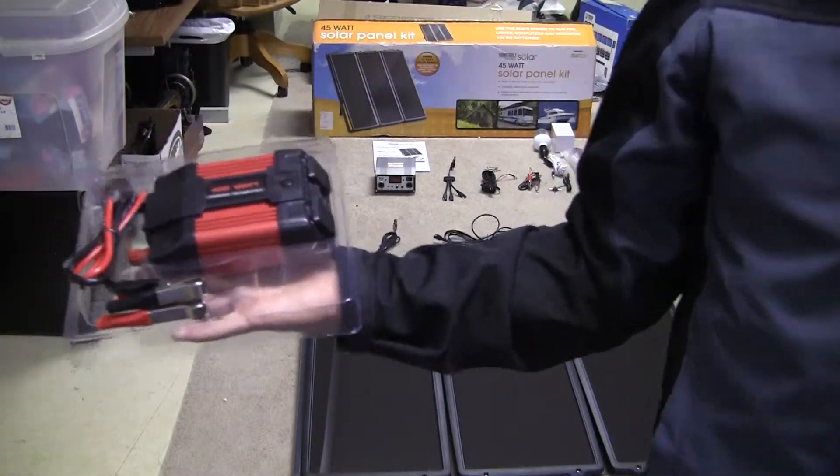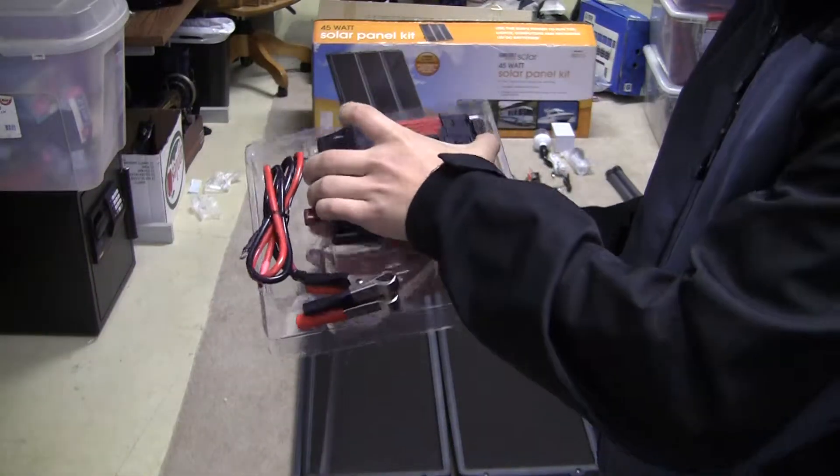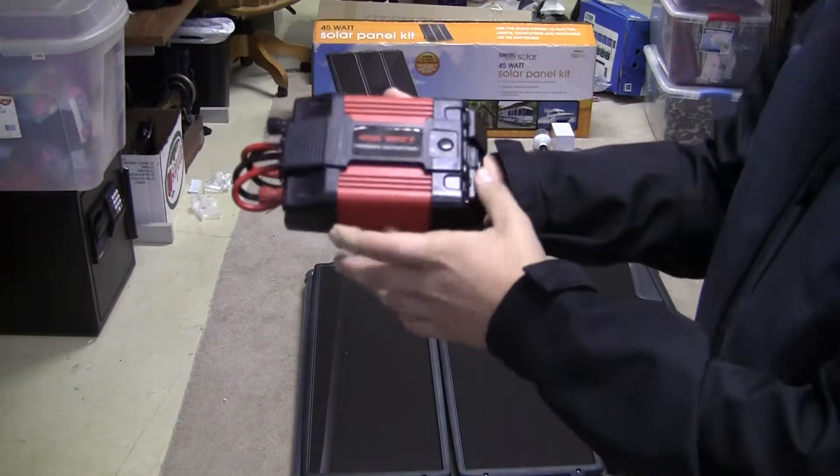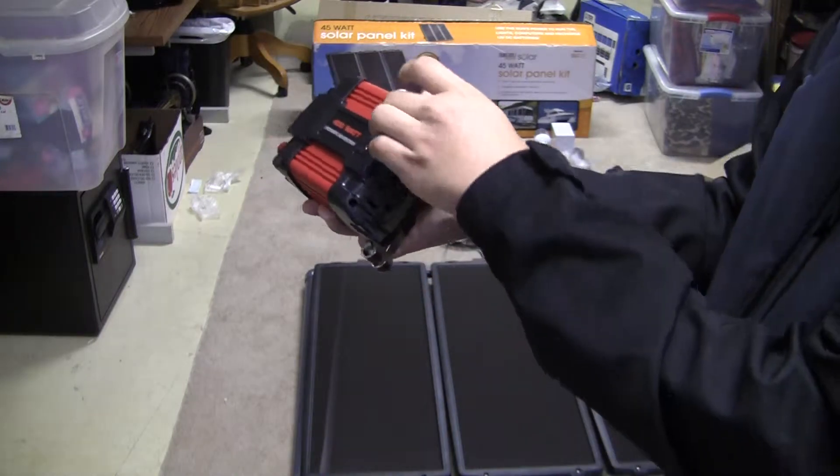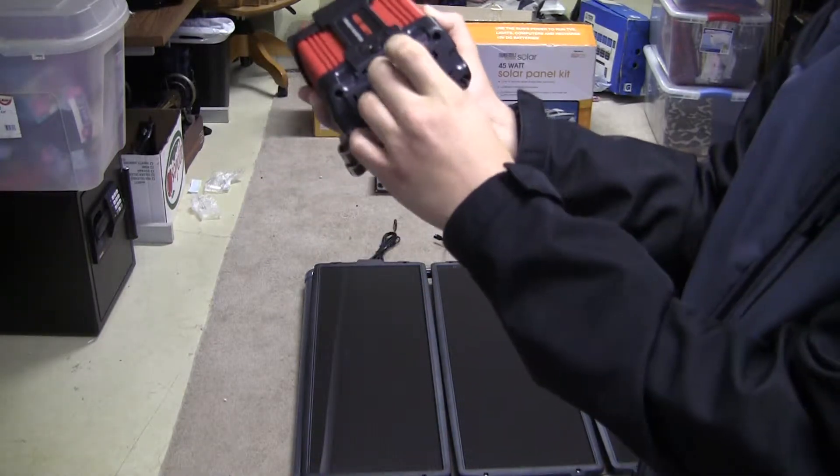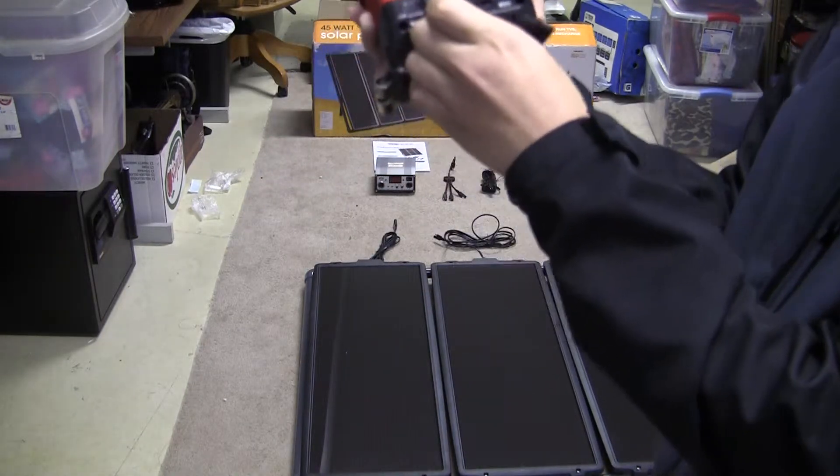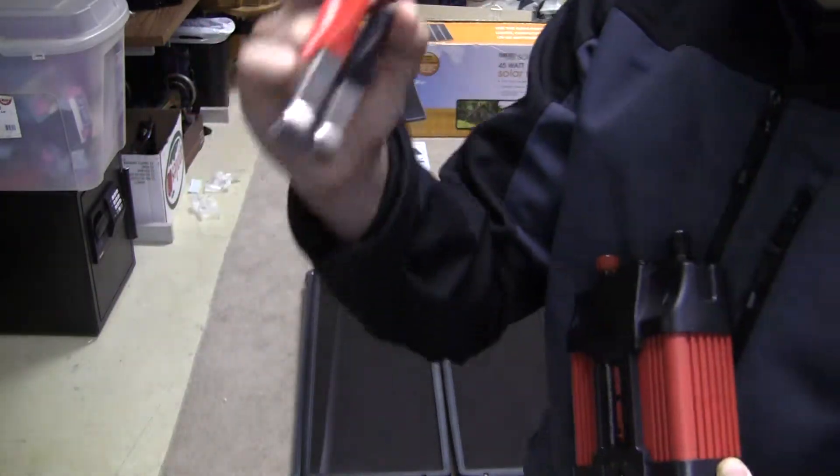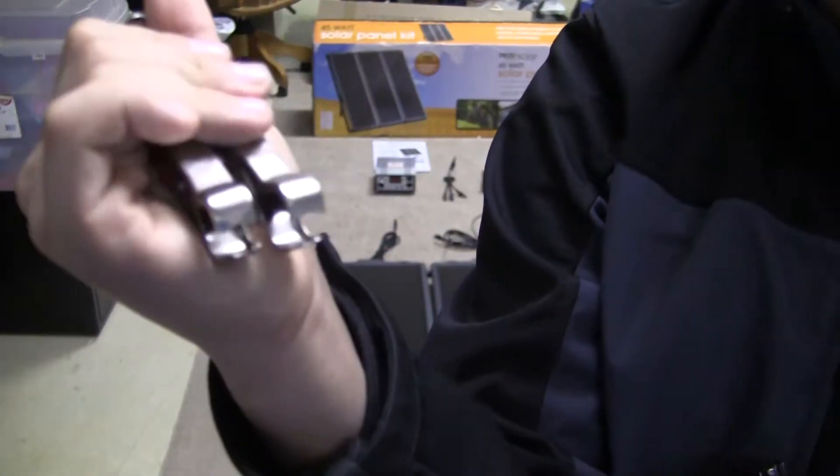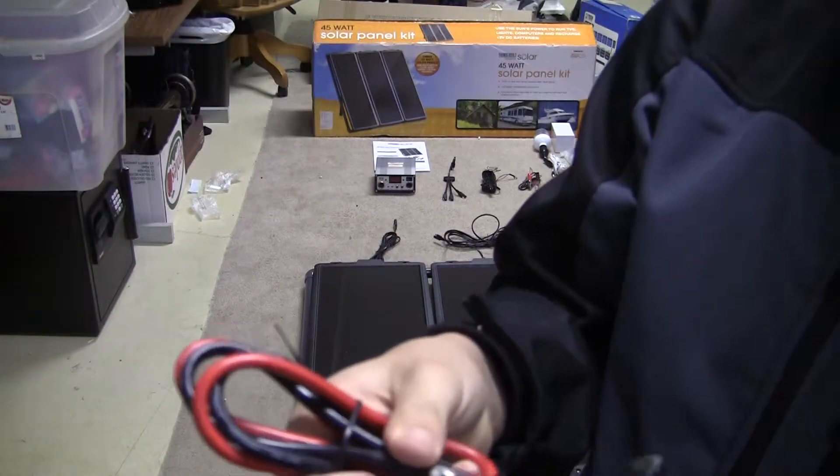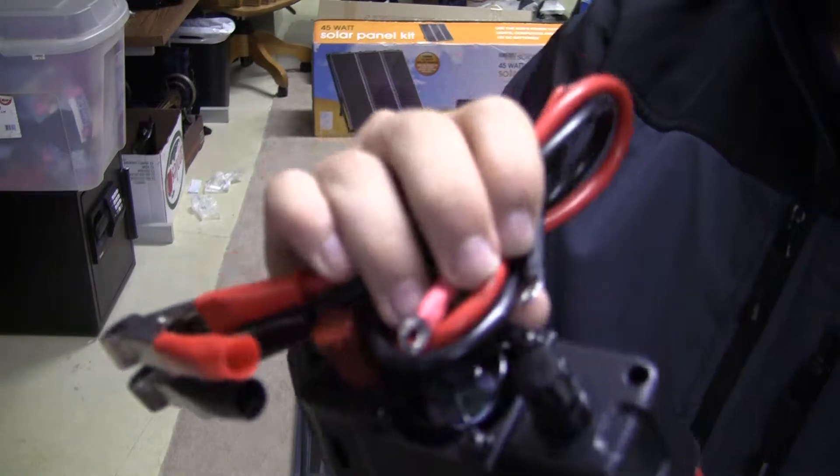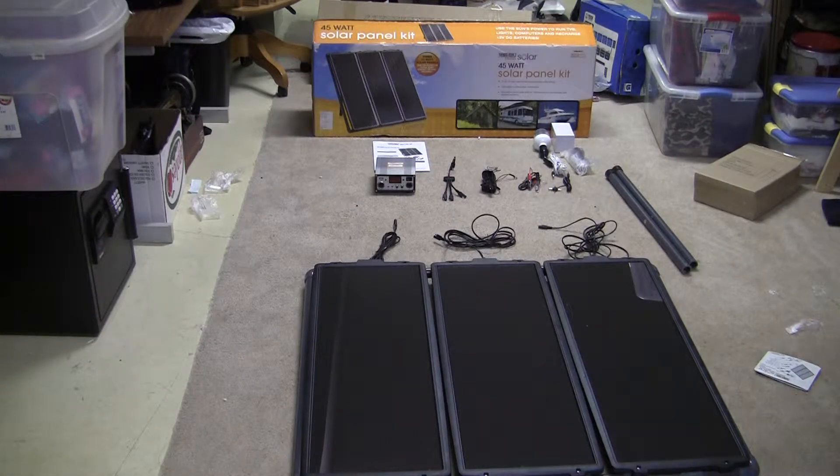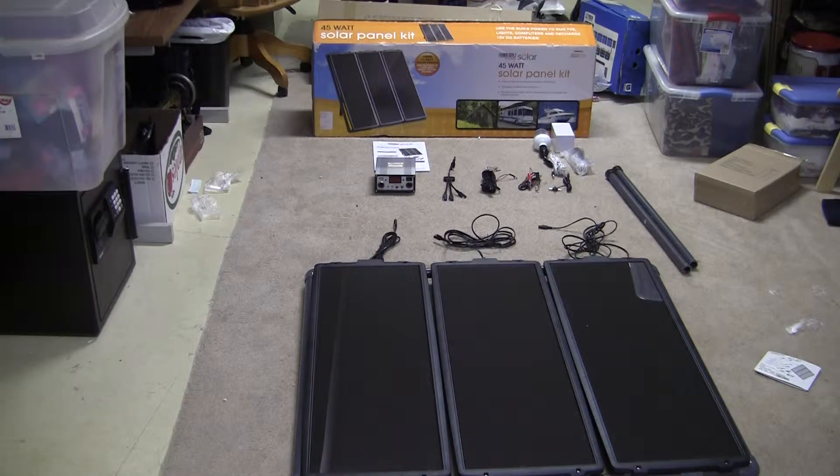I'm just gonna open it up here. This is what you get inside: you get the inverter, two AC plugins and a USB plug-in right here, and then you get these alligator clips that hook onto the back here of it right there.